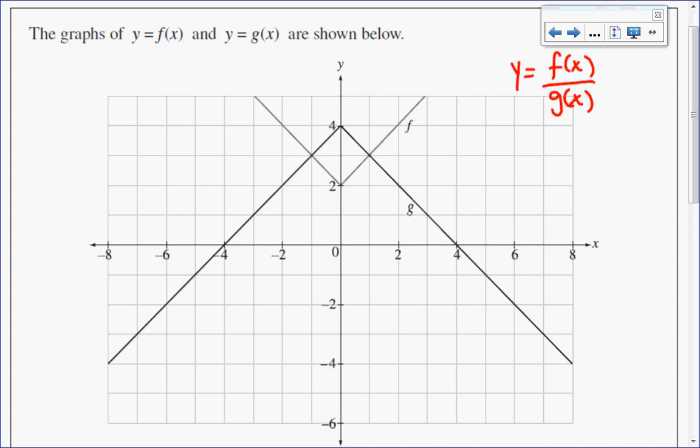So the first thing that I look at is I'm dividing by g of x. So I want to look to see, is g of x, the y value of g of x, ever equal to 0? And I see two points where that is the case. The x-intercepts of 4, 0 and negative 4, 0 have a y value of 0. So when those go into the denominator, I have a potential for division by 0. So I know that I'm going to have a vertical asymptote at x equal to 4 and negative 4.